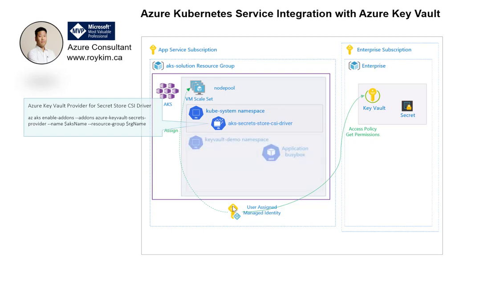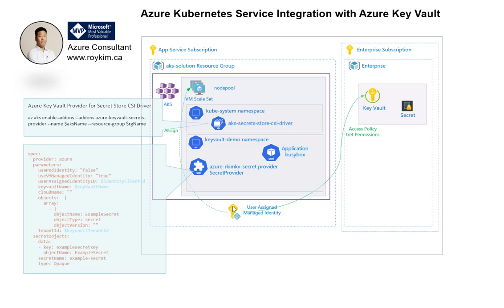Once that's set up, here is my demo where I created a namespace and deploy a Kubernetes pod. I'm using the busybox container image — very lightweight. In order to bring in that secret into this pod, we need to create a Secret Provider Class YAML manifest. This is part of the Azure Key Vault provider add-on — it's a custom resource definition. Here we define which Key Vault to integrate with, along with the user-assigned identity ID, and also the secret name within the Key Vault, which in this case is called example secret.